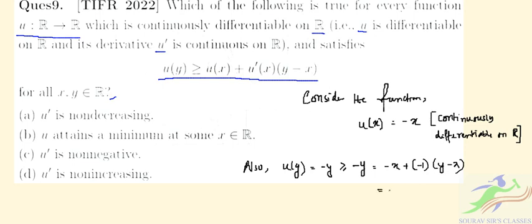So we can write it as u(x) + u'(x)(y - x), right? For all x and y belongs to the real space ℝ.